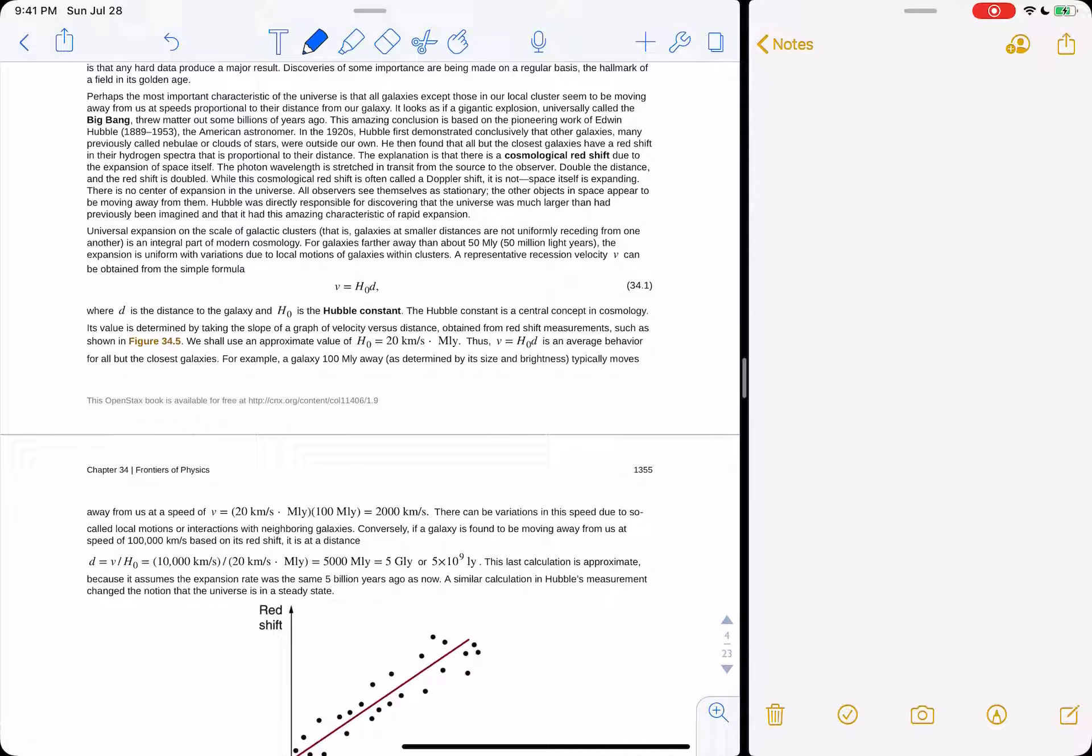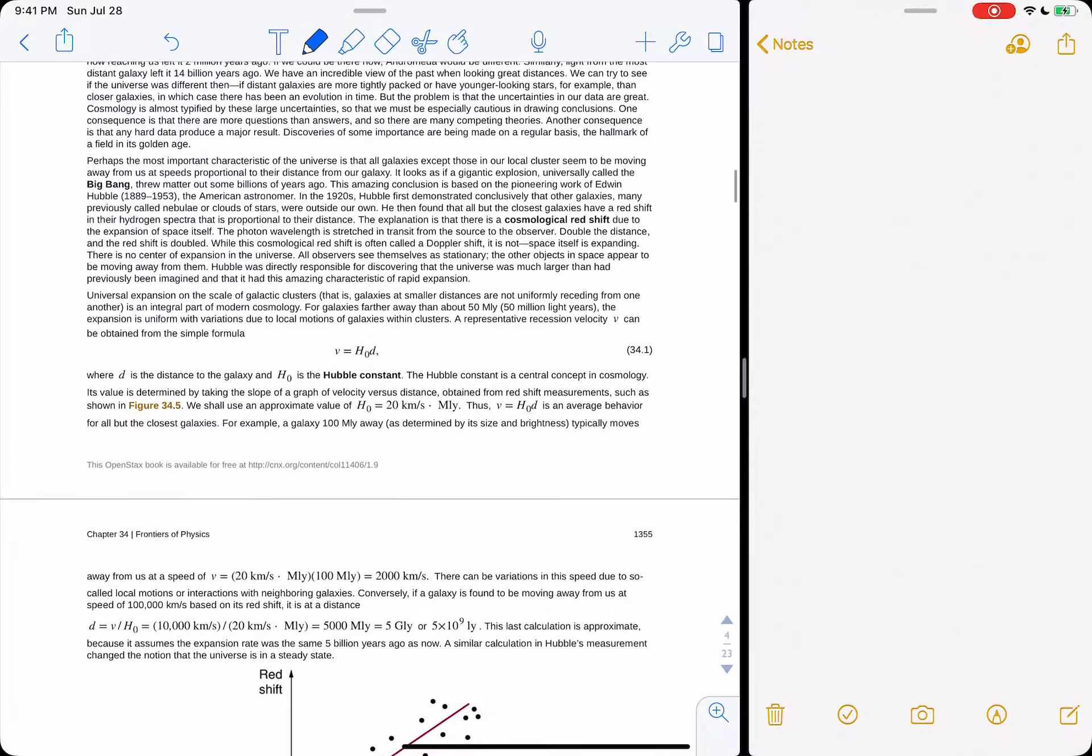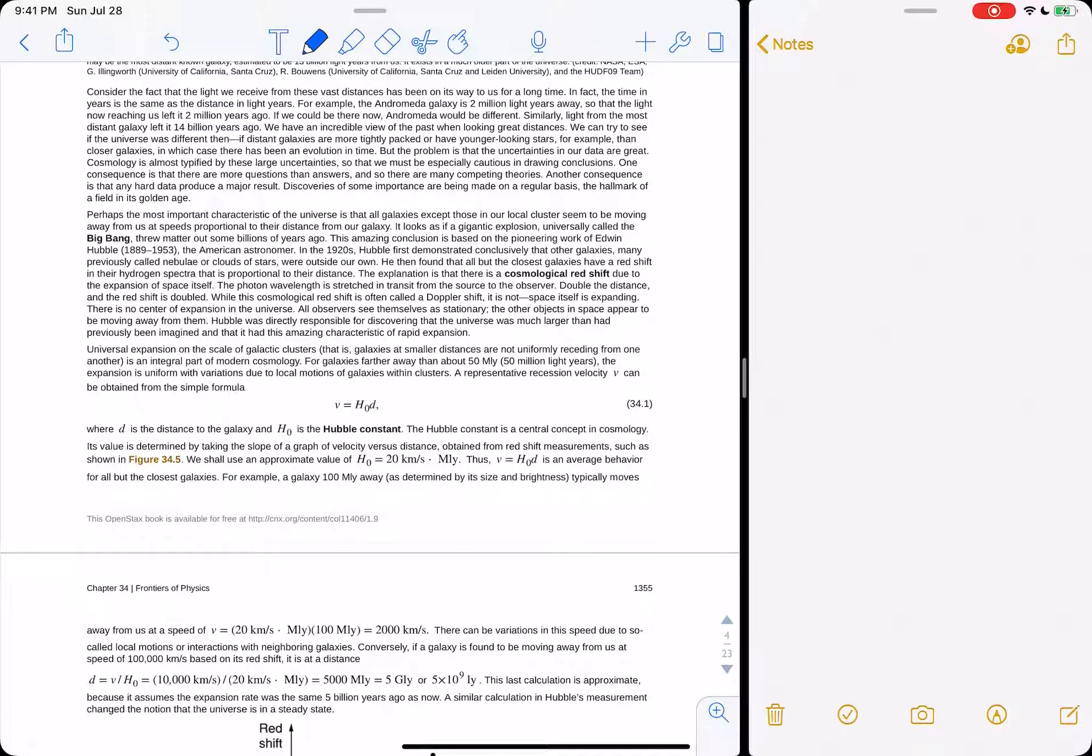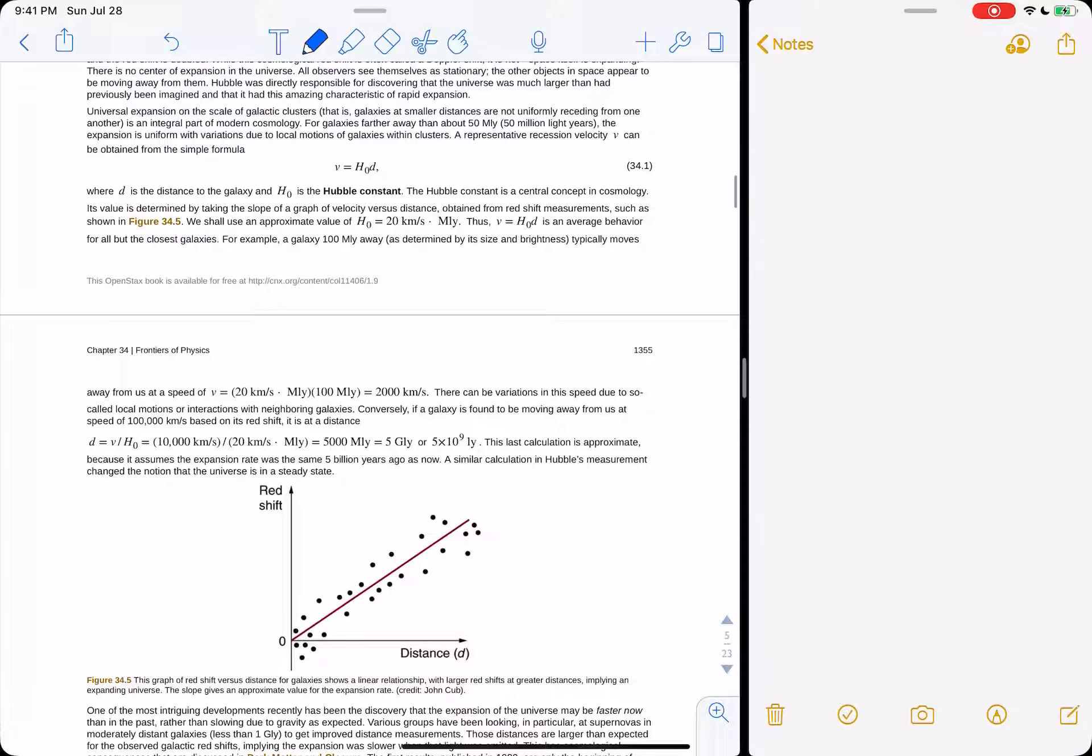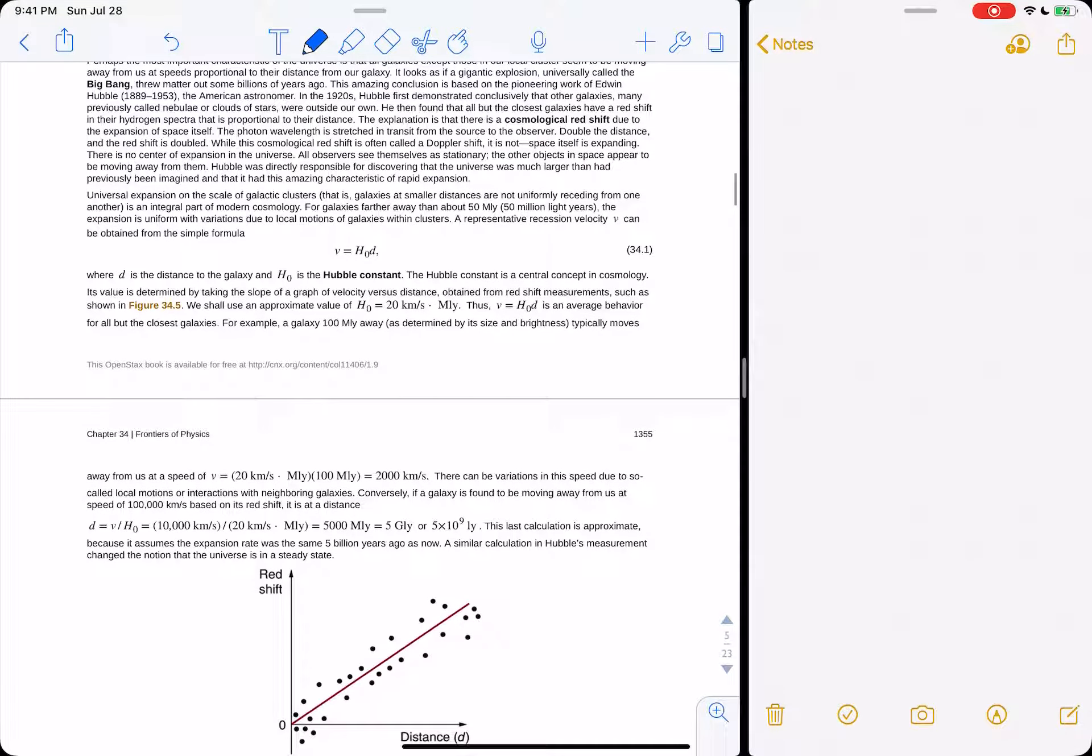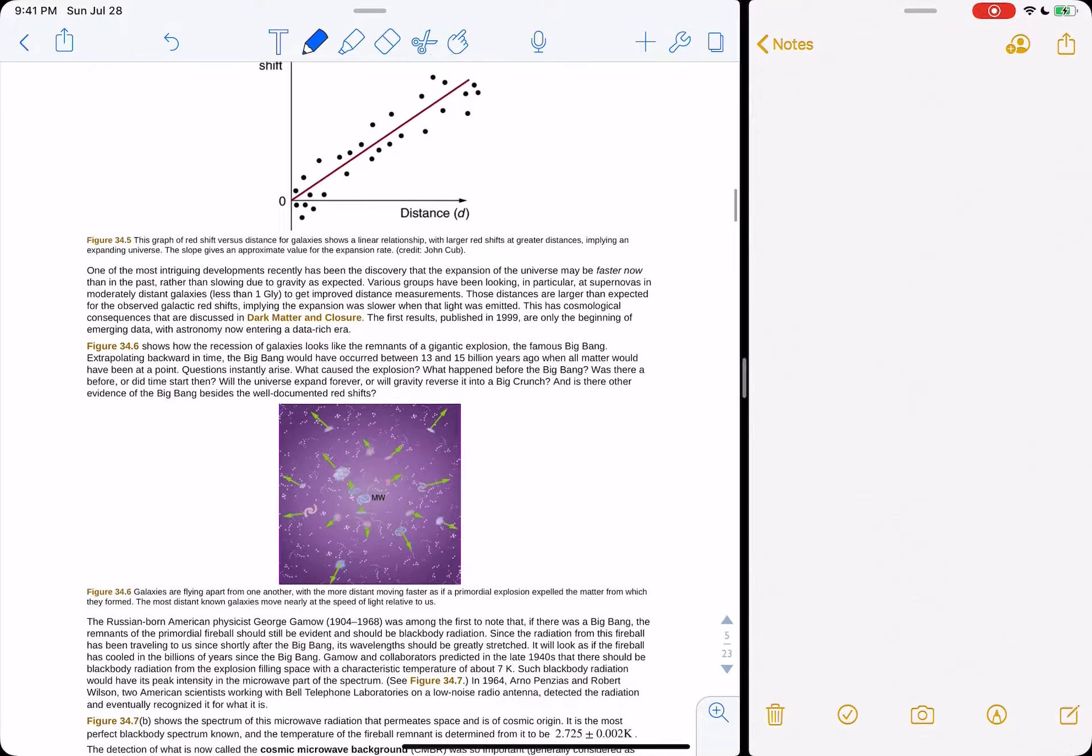The Hubble constant has units of kilometers per second per megaparsec or mega light year. It's like 68 kilometers per second per megaparsec, which is a different unit. Or in this case, 20 kilometers per second per mega light year. So then the Hubble constant, since it's got this time component in there, can actually tell you the age of the universe, and you get about 14 billion years just from the Hubble constant.